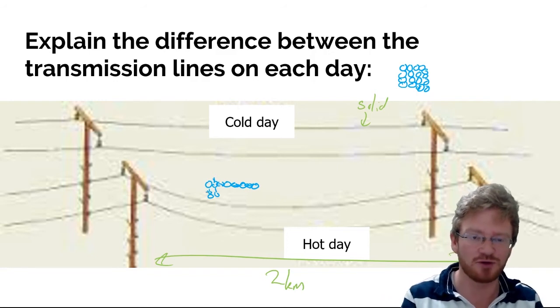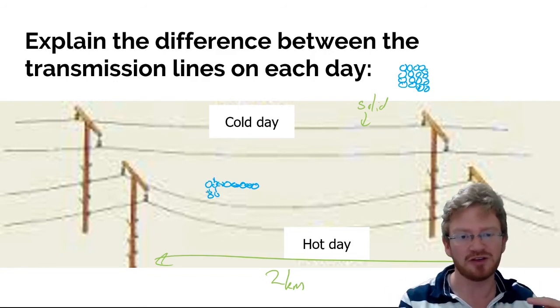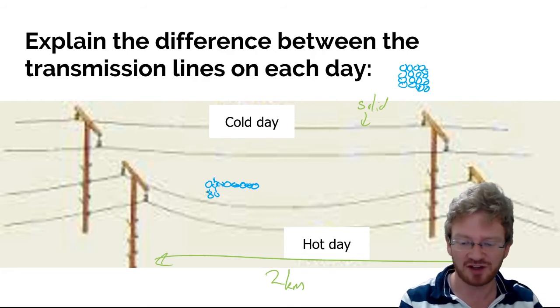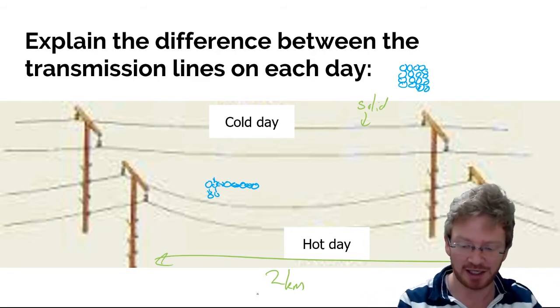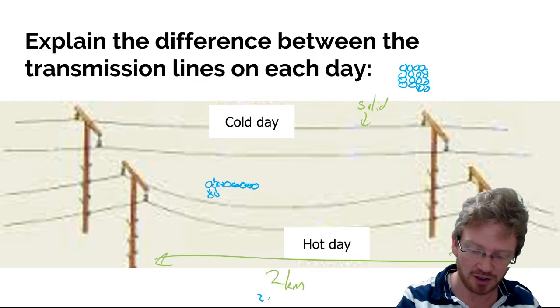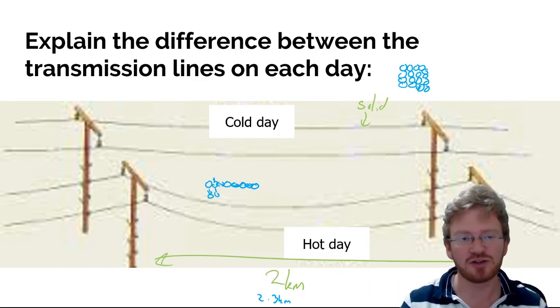And as they get further and further apart, they obviously take up more space. So, in other words, if this started out as a two-kilometre long piece of wire, when we make it really hot, because it's got longer, it might now be a 2.3 kilometre long piece of wire. And if it's 2.3 kilometres long, it's going to be extra length, so it's going to droop down.